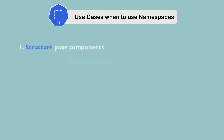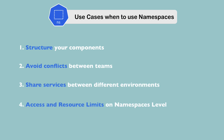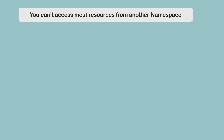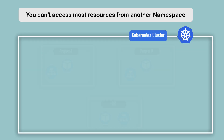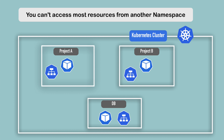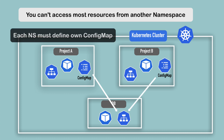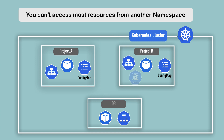There are several characteristics to consider before deciding how to use namespaces. The first is that you can't access most resources from another namespace. For example, if you have a config map in project-A namespace that references a database service, you can't use that config map in project-B namespace — you'll have to create the same config map there. Each namespace must define its own config map, and the same applies to secrets: if you have credentials for a shared service, you'll have to create that secret in each namespace where you need it.